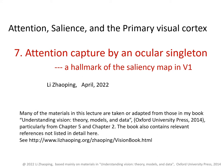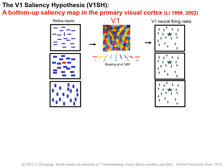Attention capture by an ocular singleton, a hallmark of the saliency map in V1. We have seen that a salient location can be due to a unique orientation, a unique color, or a unique motion direction.